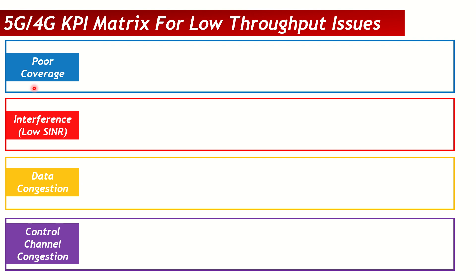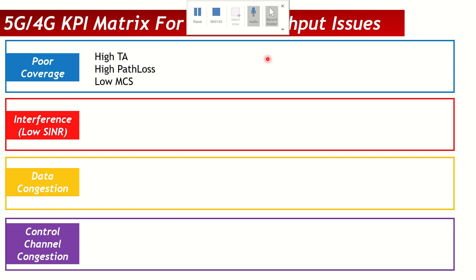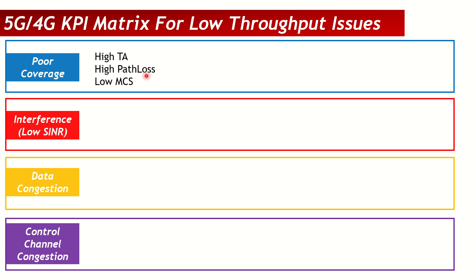The first cause is poor coverage. The KPIs to look at: if you have high TA (timing advance), that means users are far away from the cell. Similarly, you will have high path loss, indicating users are very far from the cell. With high TA and high path loss, users are at cell edge, and correspondingly you will have lower MCS — modulation and coding scheme. A high tendency of QPSK with higher TA and higher path loss indicates a coverage issue.